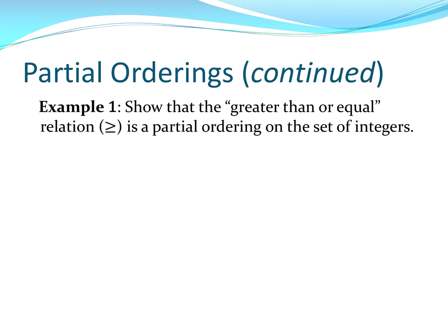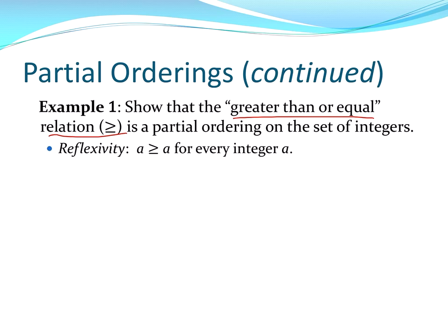Let's look at an example. I want to show that the greater than or equal to relation is a partial ordering on the set of integers. It has to have those three properties. Looking at reflexivity first: a is greater than or equal to itself for every integer a, so it is reflexive.